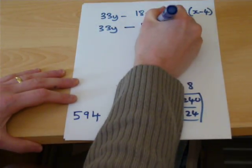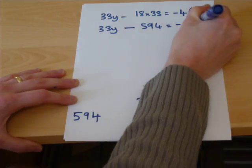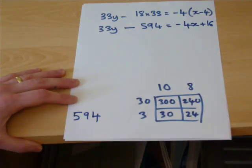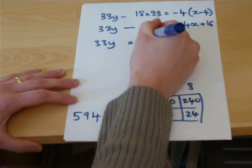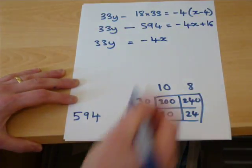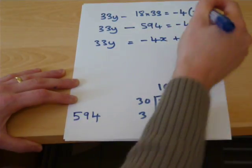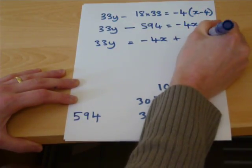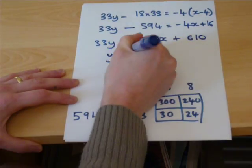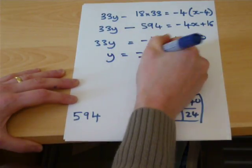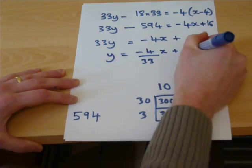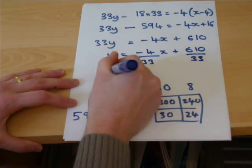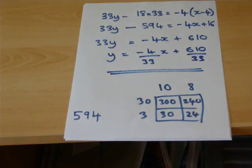594 equals minus 4x plus 16. So, 33y equals minus 4x plus 610. And that is the equation of the normal.